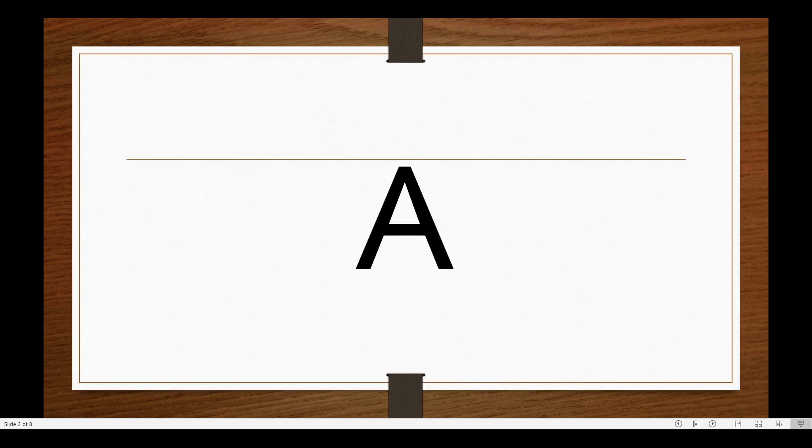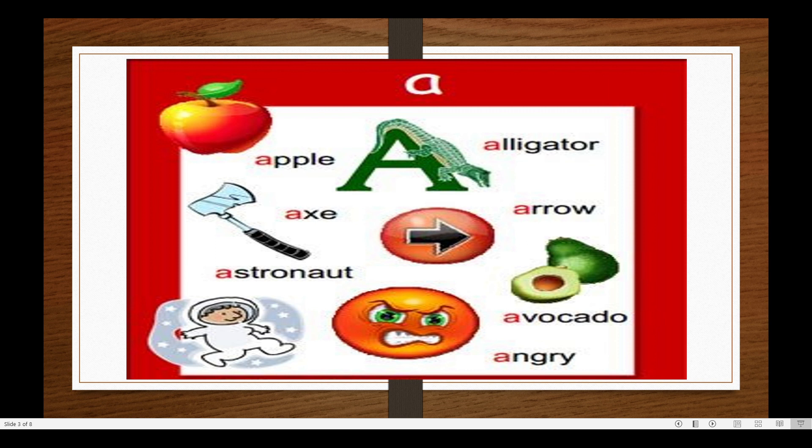First is letter A. The sound for letter A is A. The sound for letter A is A. Everybody say A. Okay, very good. Now let's start. Let's say the word while emphasizing the sound of letter A, which is A.